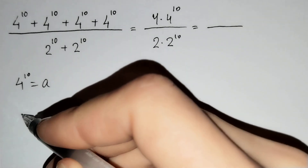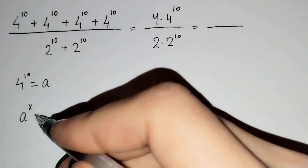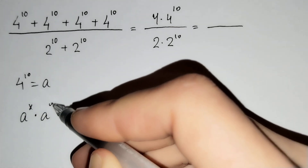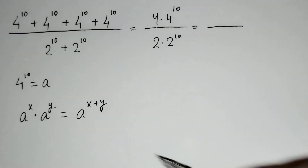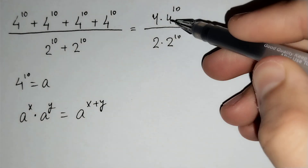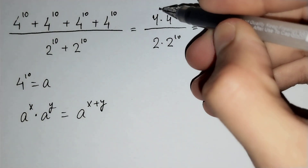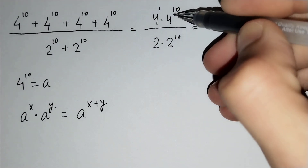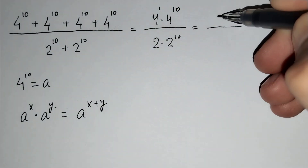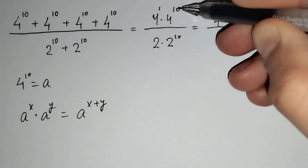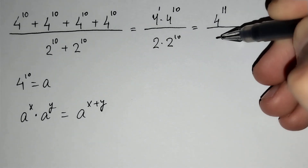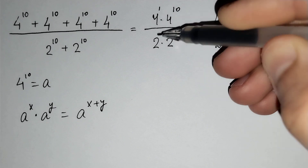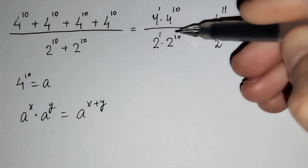And since a power x times a power y equals a power x plus y, for this here: 4 power 1 times 4 power 10 equals 4 power 1 plus 10, which is 4 power 11, over 2 power 1 plus 10, which is 2 power 11.